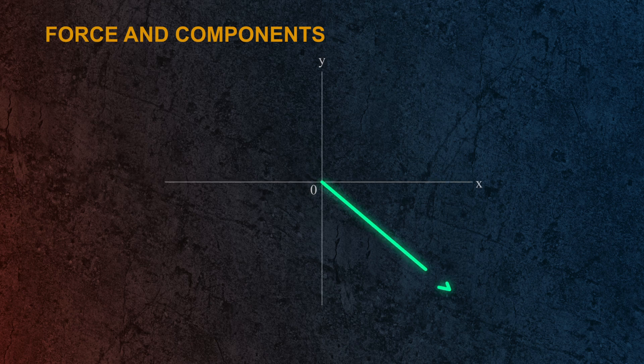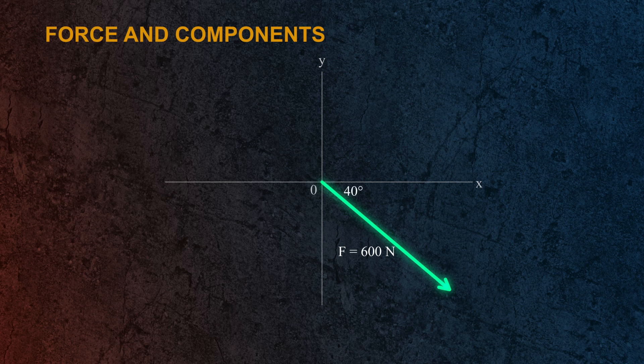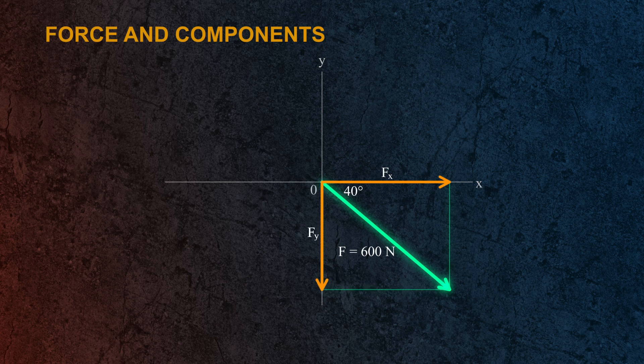Here we have a force of 600 newtons acting at an angle of 40 degrees from the x-axis. Let us solve for the x and y component of this force.